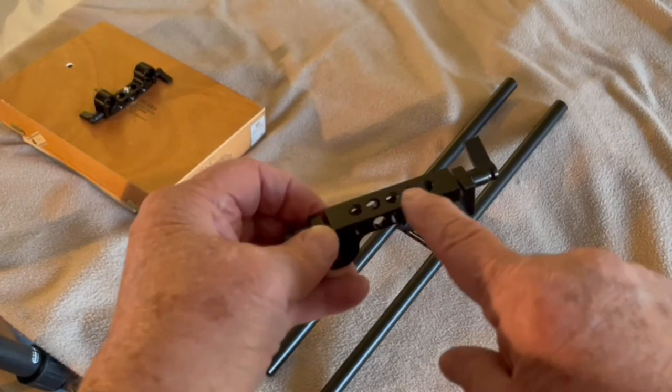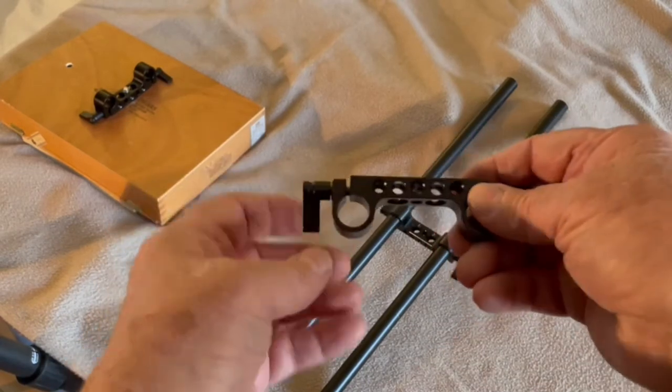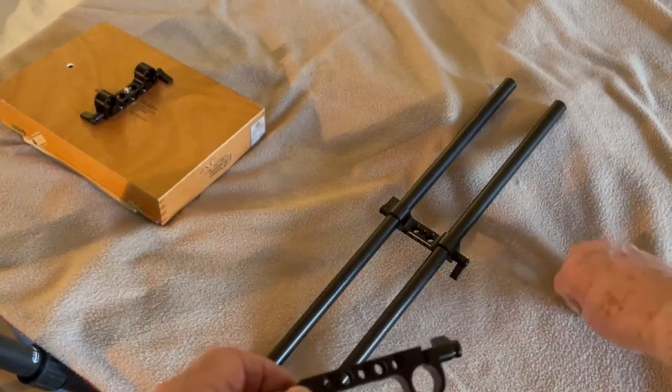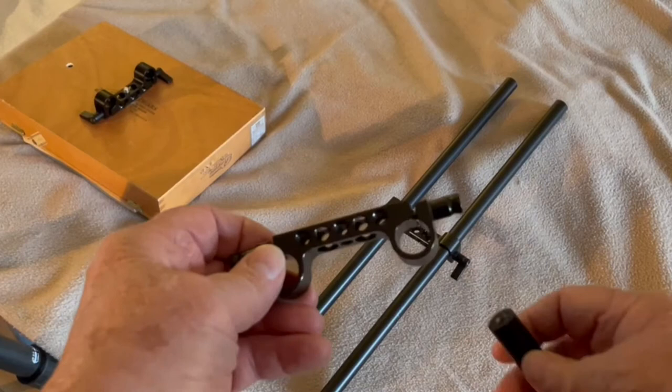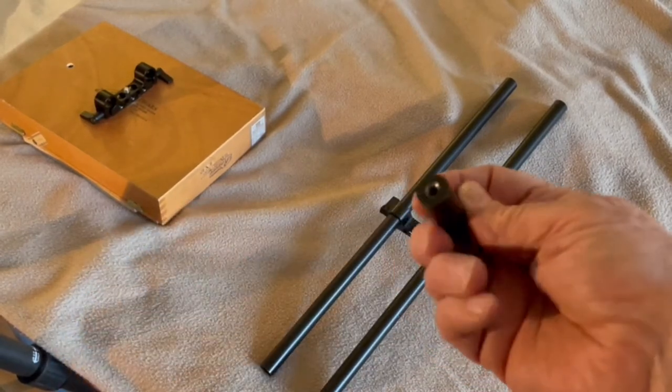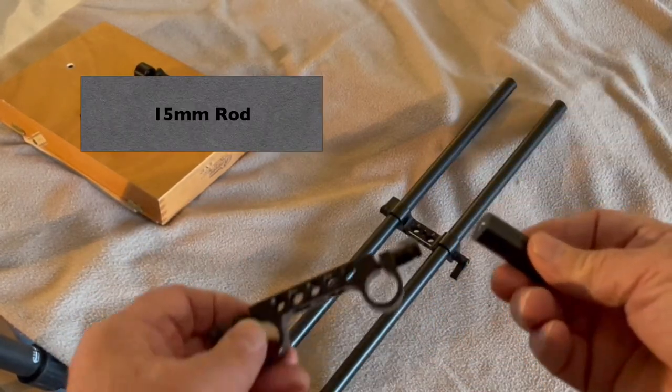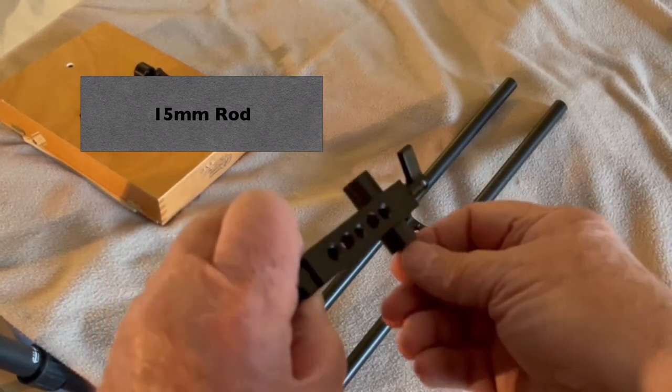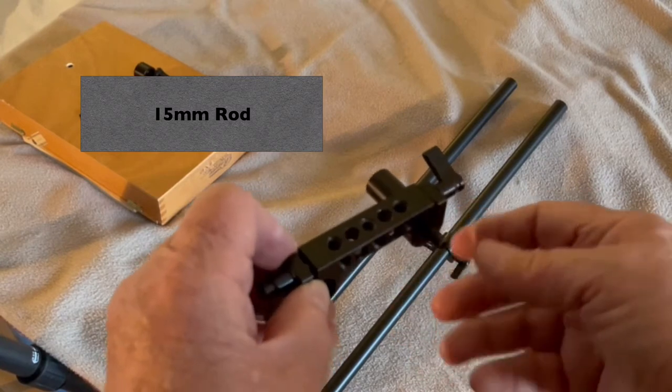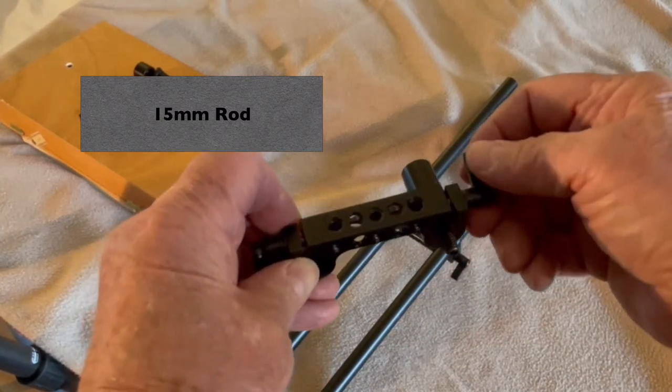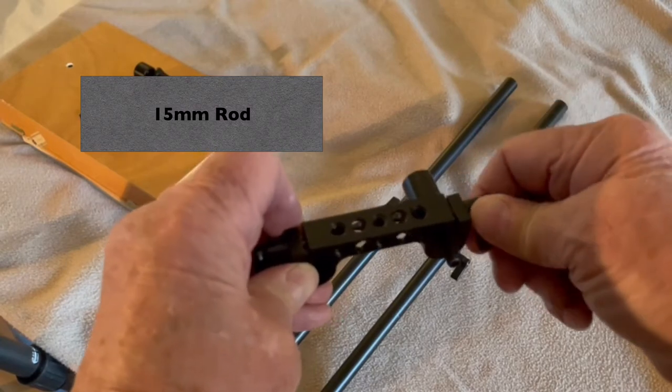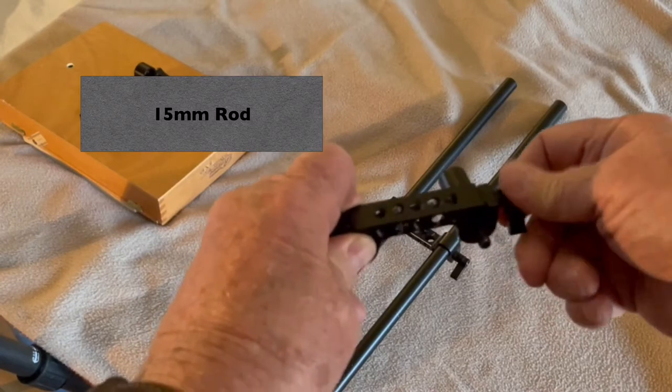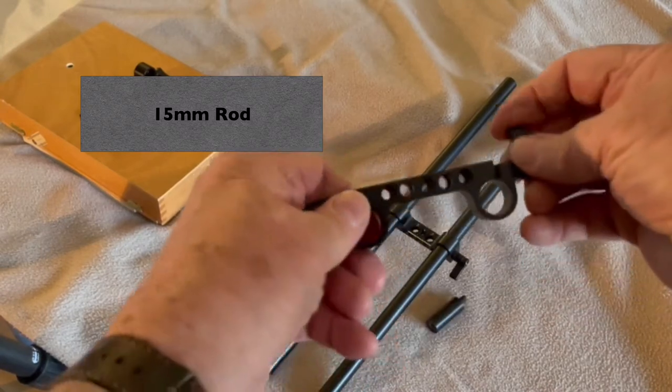This is all cut from anodized aluminum. These holes are designed to work with 15 millimeter aluminum rod. This is just a small piece of 15 millimeter rod that as you can see goes in there and then we can clamp it down tightly and it won't fall out. Loosen it up and it will come out.